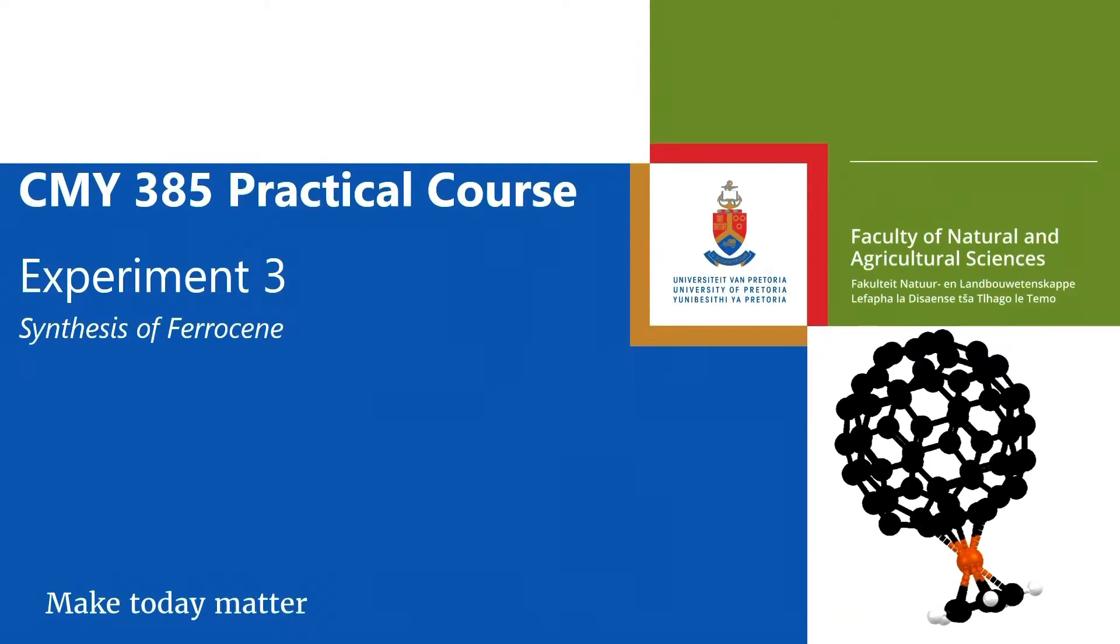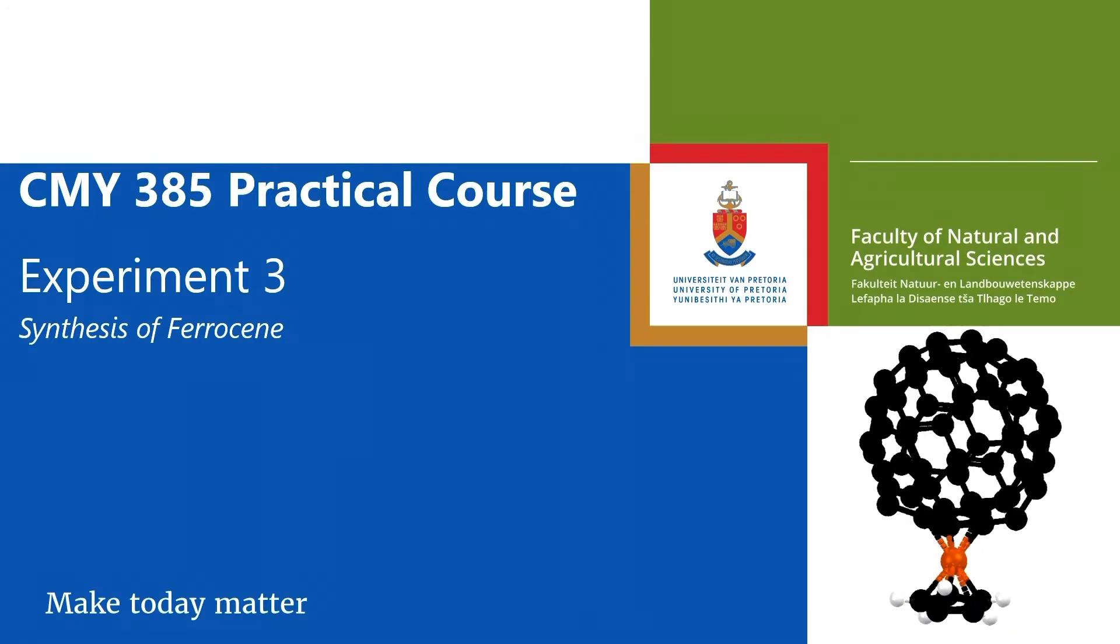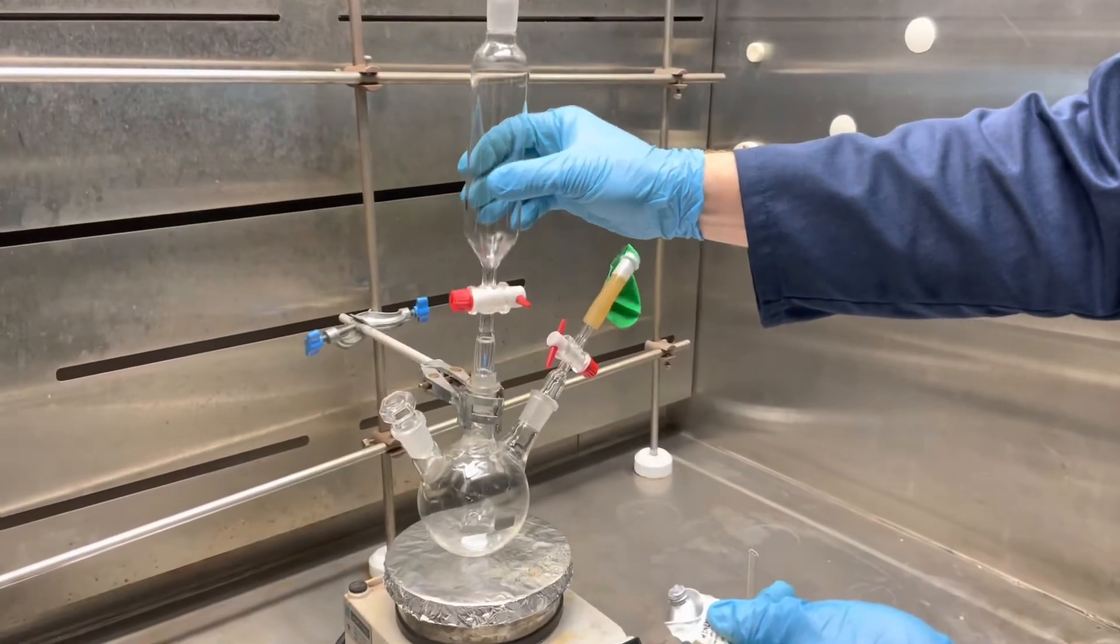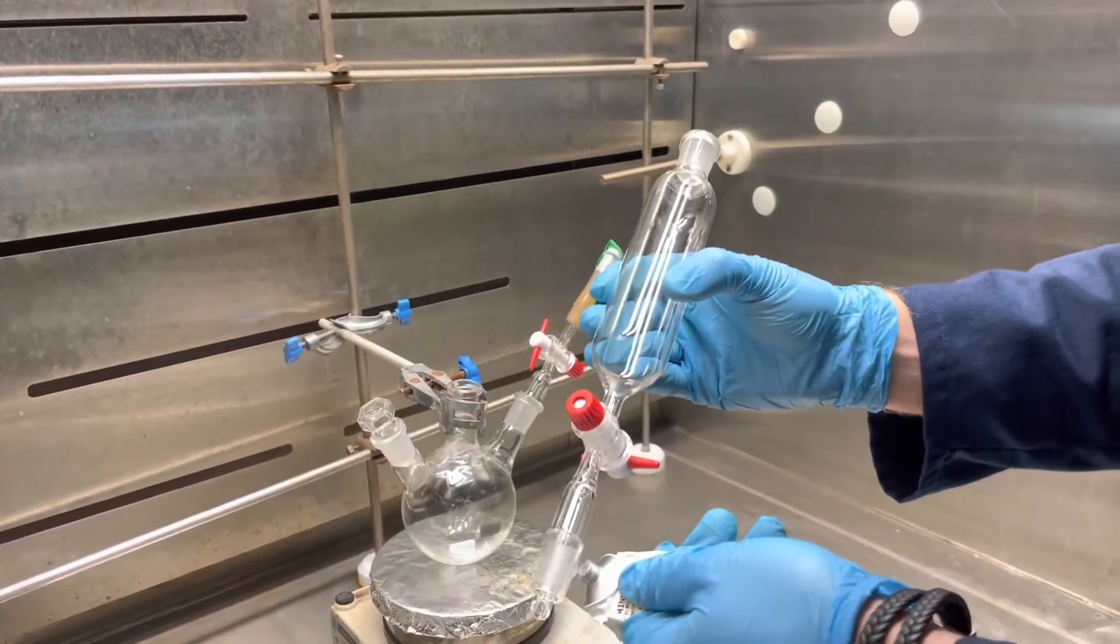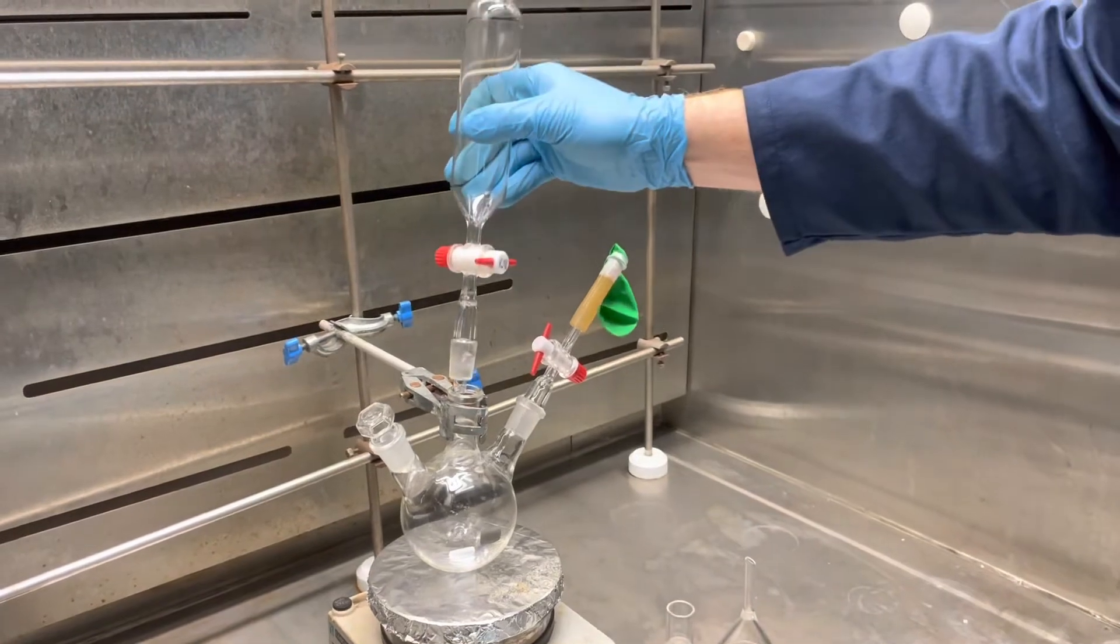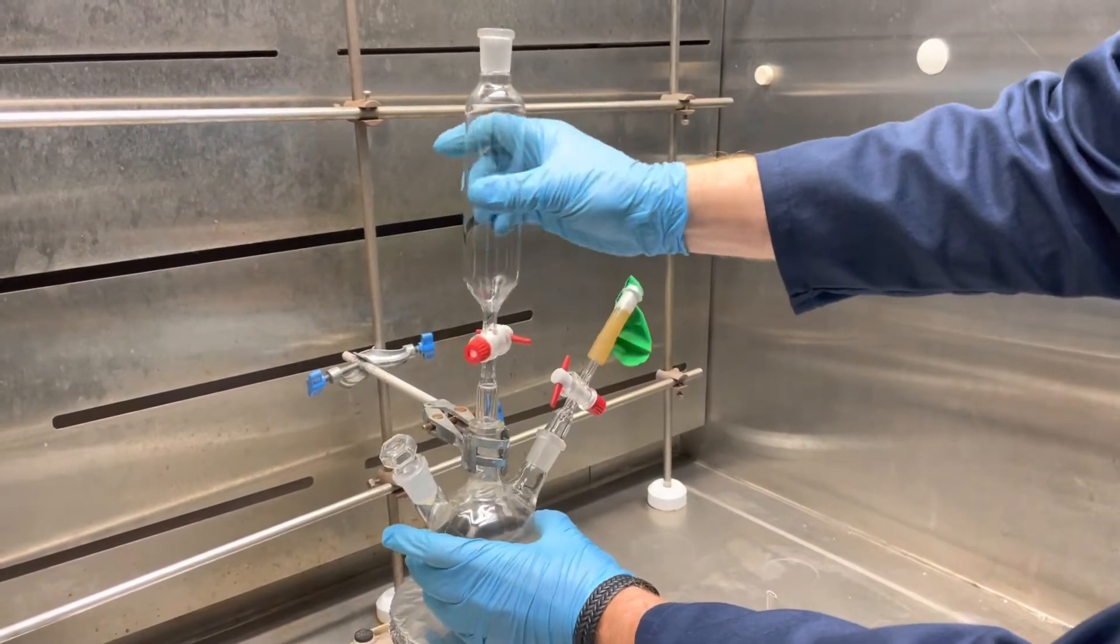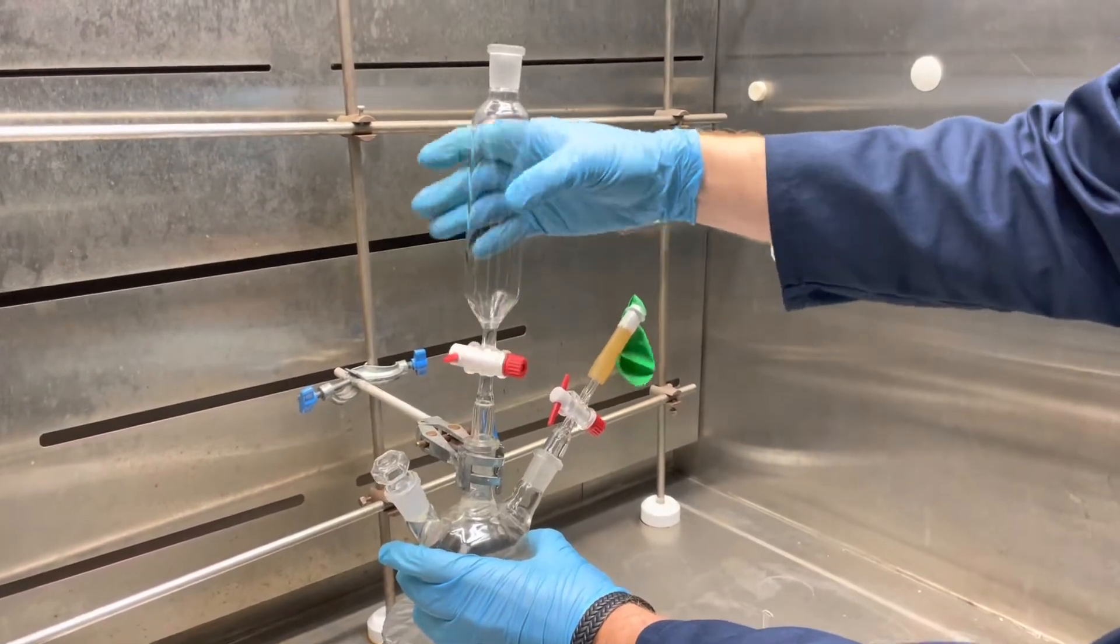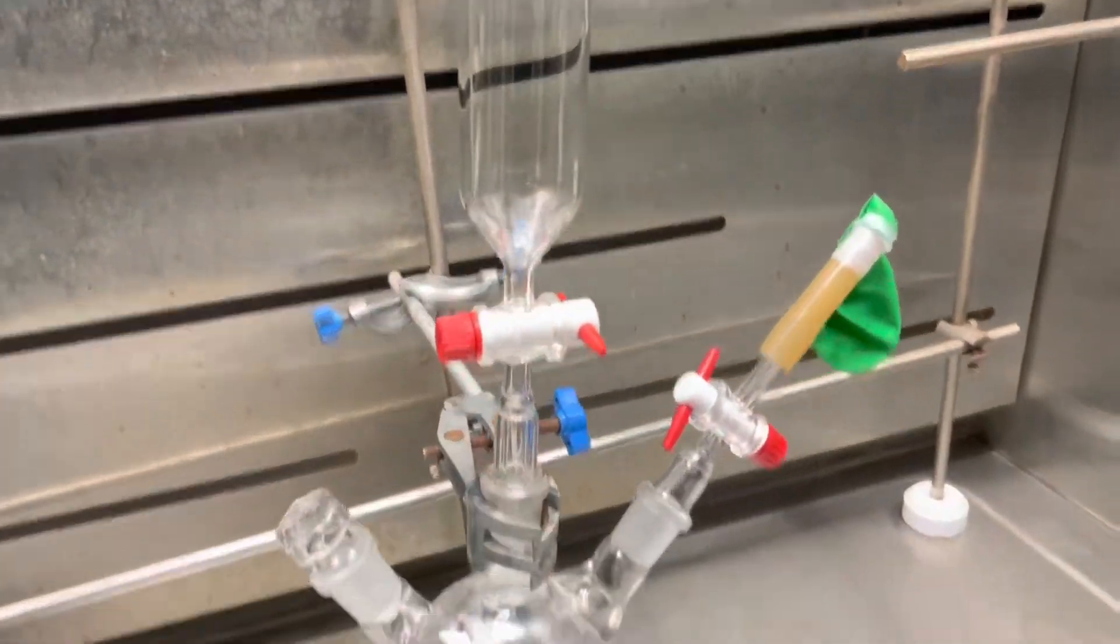Welcome to the experimental video for experiment 3, the synthesis of ferrocene. You will start with a three-neck flask set up as shown here. For all your stoppers as well as all the connections to the dropping funnel and your balloon setup, you will need to use some grease to ensure that there is a tight seal and fit between all the connections in your setup.